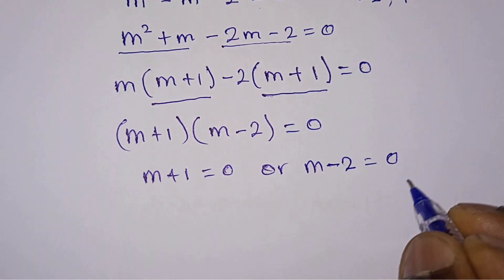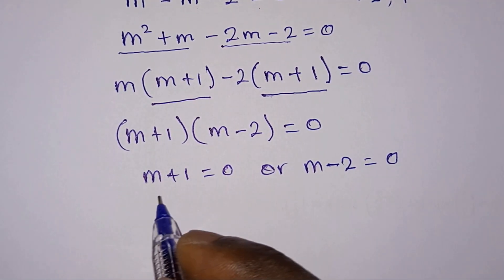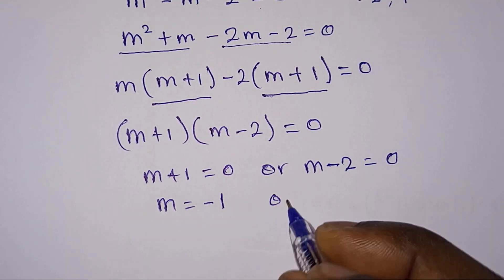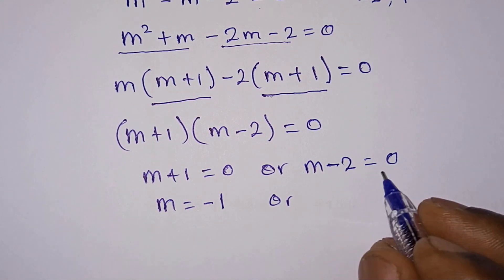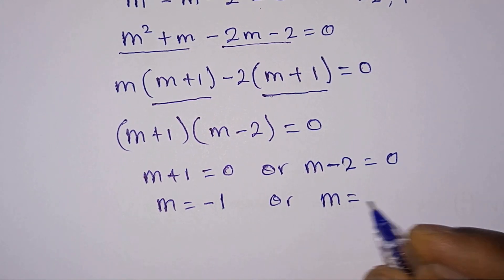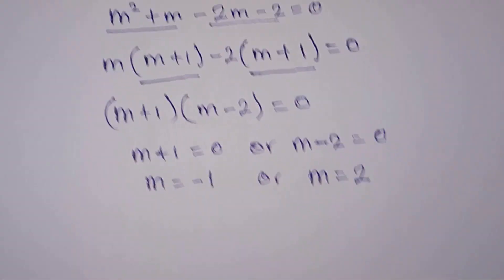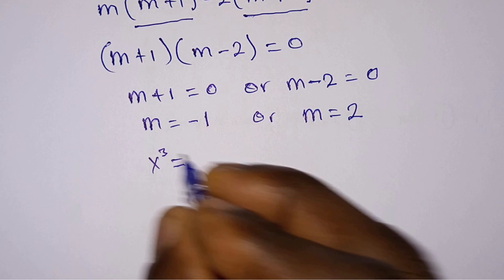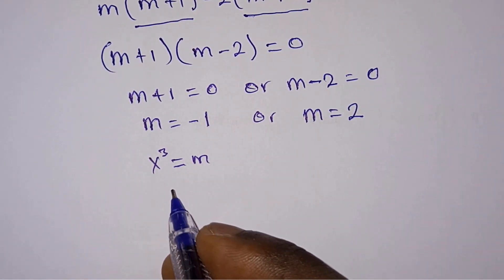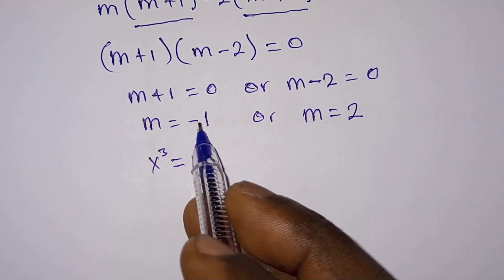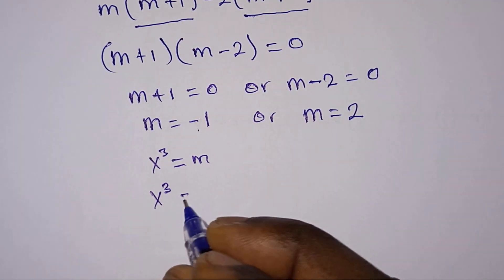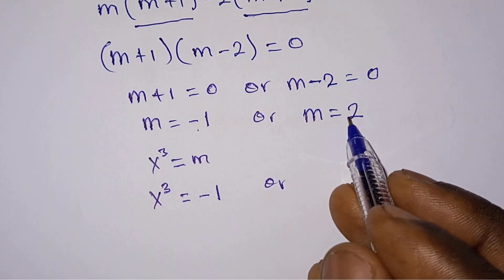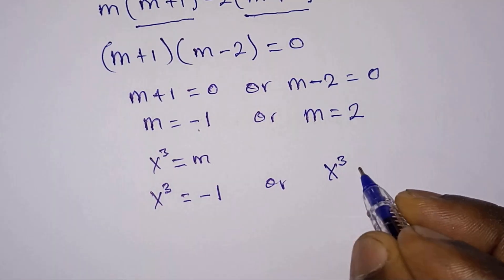So m plus 1 equals 0, giving m equals negative 1, or m minus 2 equals 0, giving m equals 2. But remember, initially we let m equal x cubed. So when m equals negative 1, we have x cubed equals negative 1, and when m equals 2, we have x cubed equals 2.